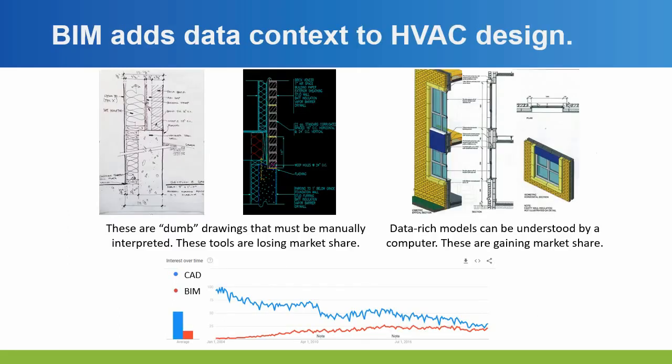BIM adds data context to HVAC design. Before BIM you're dealing with hand drawings and CAD drawings — very data poor. If you're dealing with 2D drawings you need an AI interpreter just to understand that a line is brick or insulation — very hard. BIM is a total game changer. I don't need an AI algorithm to identify windows; it's in the model as a window element. CAD is losing popularity and BIM is gaining. As BIM takes over, AI is much more applicable because of the amount and structure of the data.